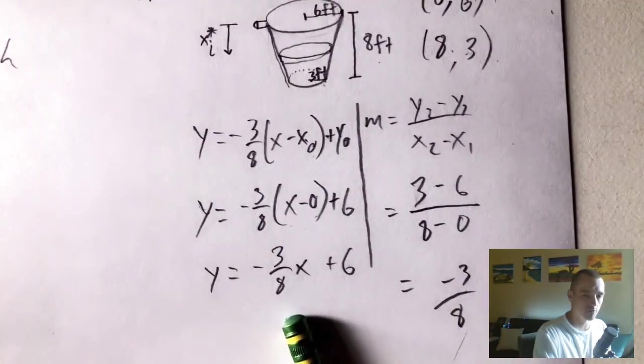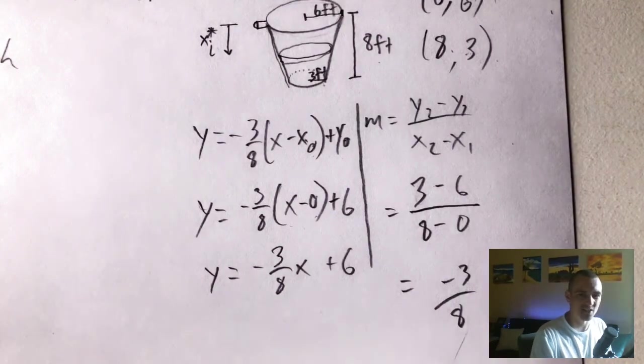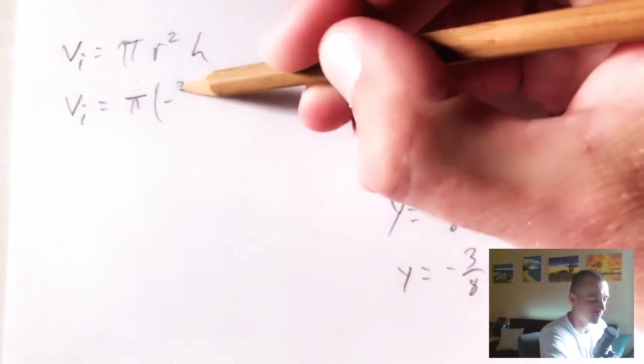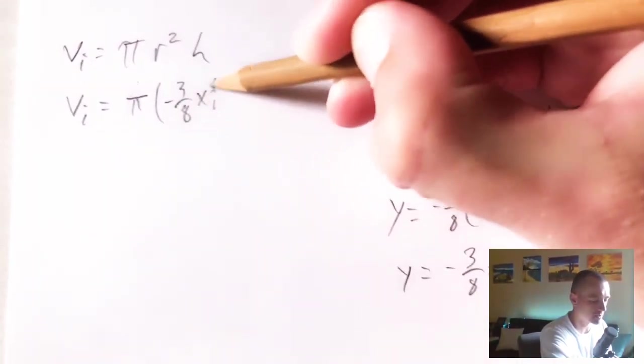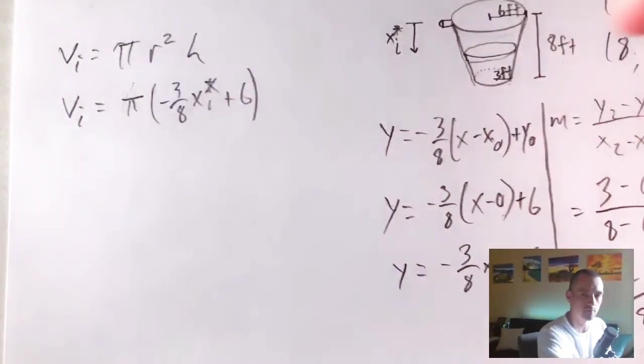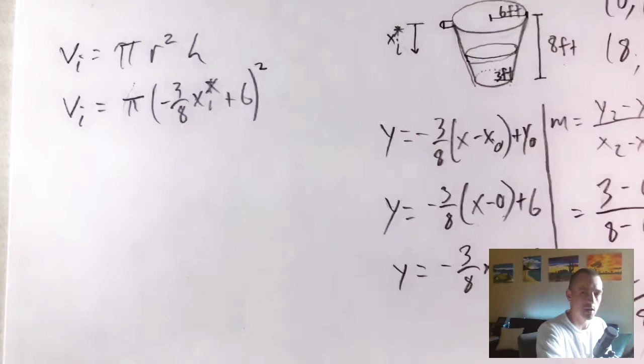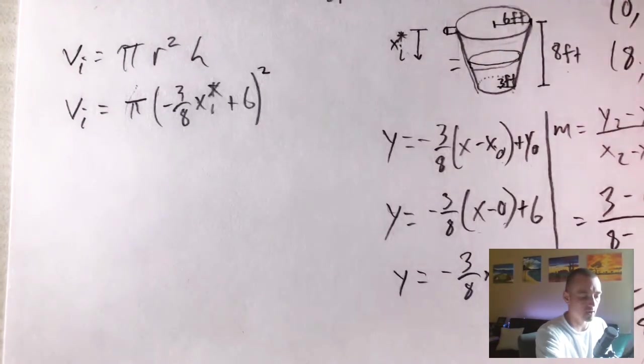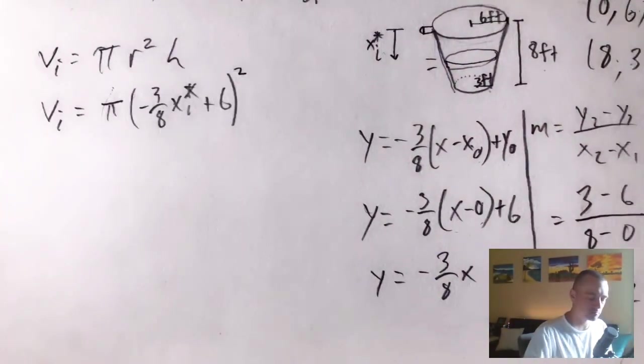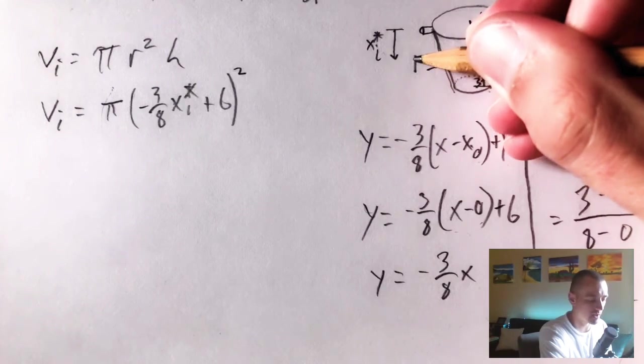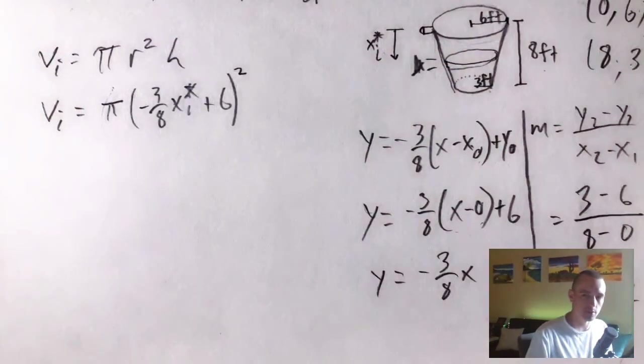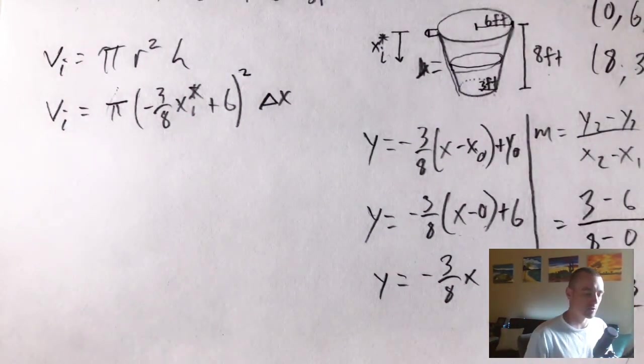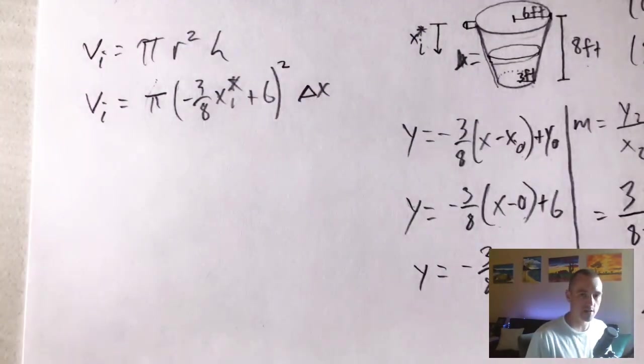So plugging this in for r, except we'll use x i star instead of x, will give us negative three eighths x i star plus six. And again, that radius is going to be squared. And then we're going to multiply that by the height of each disc. Well, the height as you go down through and look at all these infinitely thin layers, typically you just want to call that delta x, which basically just means the change in x between each layer as you go down throughout. So this is going to give us the equation for the volume of our ith layer of water.